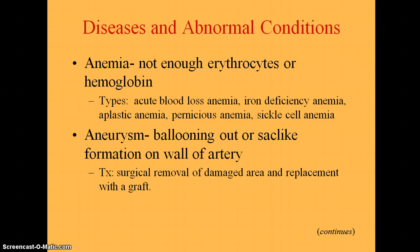Aplastic anemia results from injury or destruction of the bone marrow, so it isn't forming erythrocytes the way it should. It might be from chemotherapy, radiation, viruses, or anything like that. Treatment is to eliminate the cause and get blood transfusions or a bone marrow transplant.